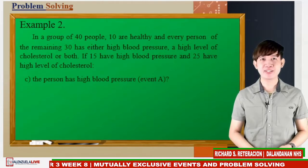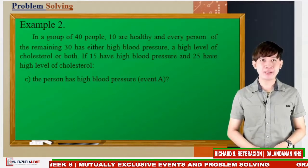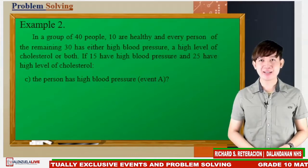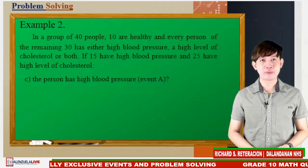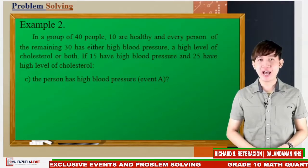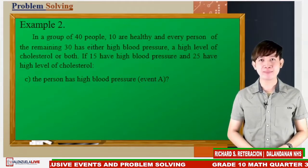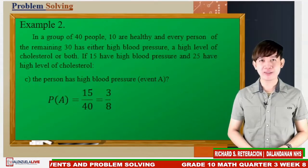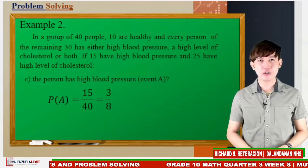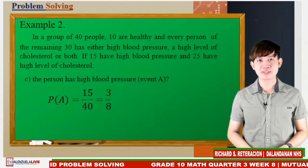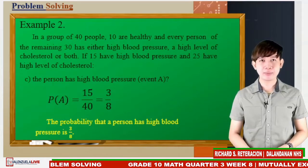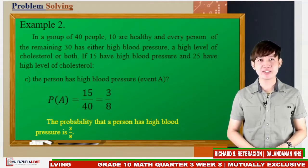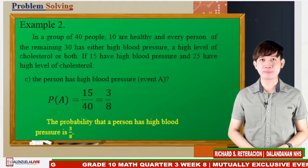Letter C: What is the probability that a person has high blood pressure? Let us name it as event A. From the problem, 15 out of 40 people have high blood pressure. The probability of event A equals 15 over 40 or 3 eighths. Thus, the probability that a person has high blood pressure is 3 eighths or 37.5%.